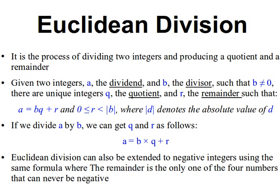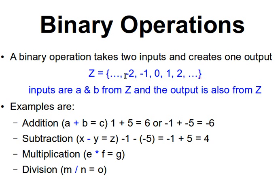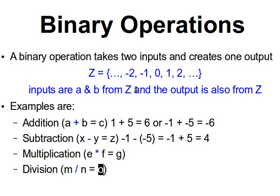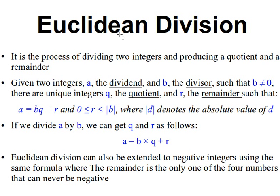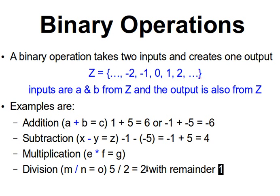What is Euclidean division? We're speaking about integer arithmetic here. Whenever we divide any two numbers from Z, we want the output to always be an integer. For example, 5 divided by 2 would normally be 2.5, but in our context we don't want the fraction — we just want the 2, and then we say 'with remainder 1'. Euclidean division is the process of dividing two integers and producing a quotient and a remainder — here the quotient is 2 and the remainder is 1.